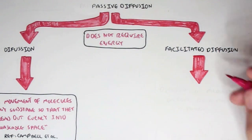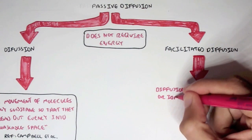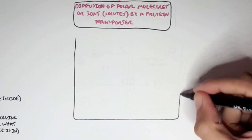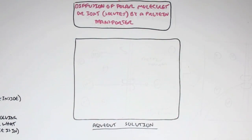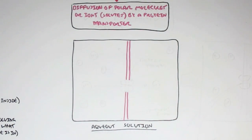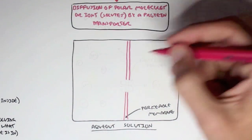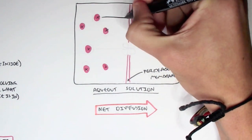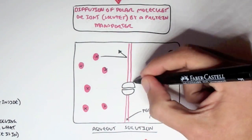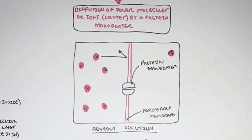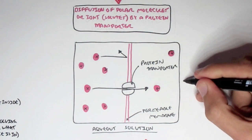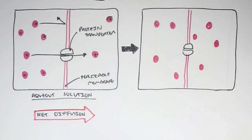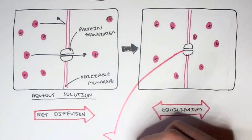Now let's look at facilitated diffusion, which is also a type of passive diffusion. It is exactly like simple diffusion except that it has the help of protein transporters. It involves diffusion of polar molecules or ions by a protein transporter. These solutes are charged or polar, so they cannot cross the permeable membrane on their own and require a protein transporter. The solutes balance out to equilibrium through the help of this protein transporter.